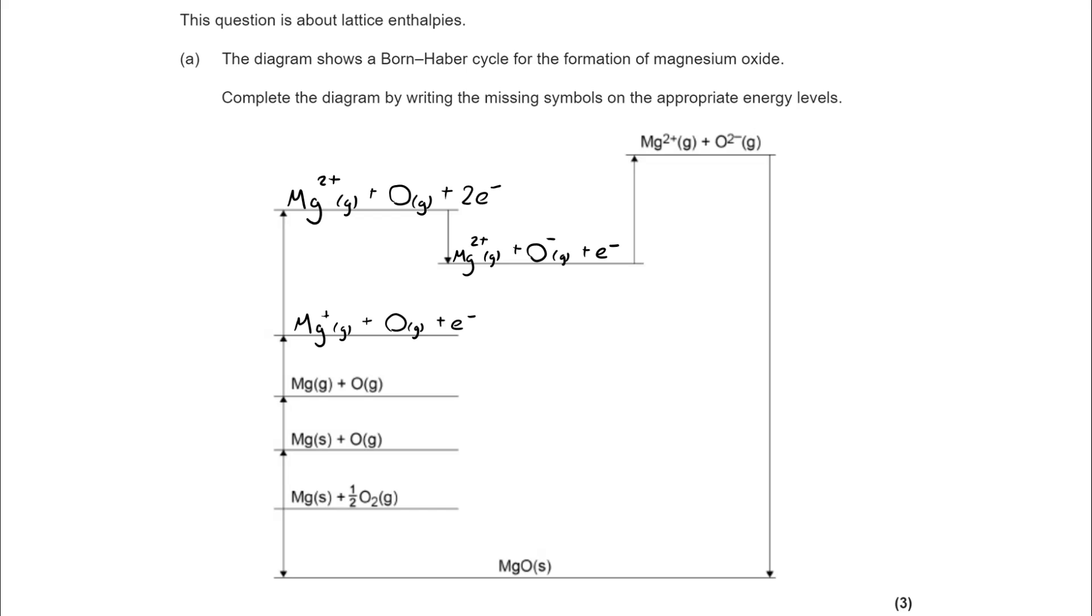You'll notice that the second electron affinity of oxygen, and actually of anything, is positive. And that is because you are gaining an electron, but if it's already a negative ion, you're overcoming the repulsive forces. So more energy has to be put in.